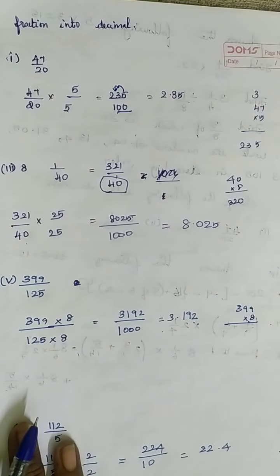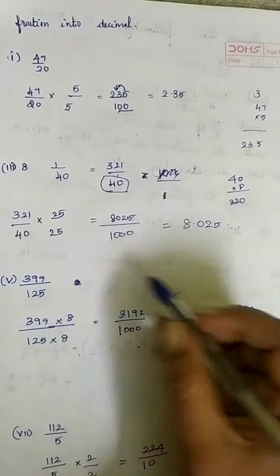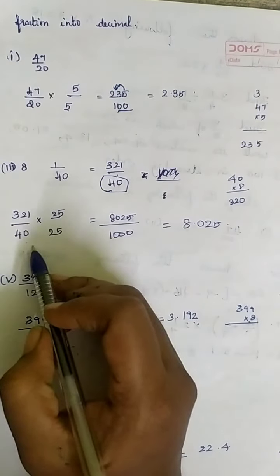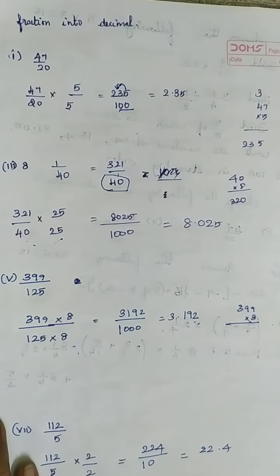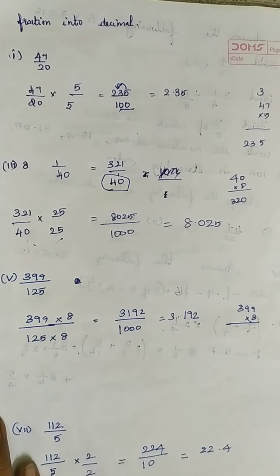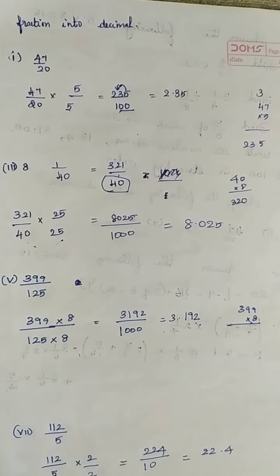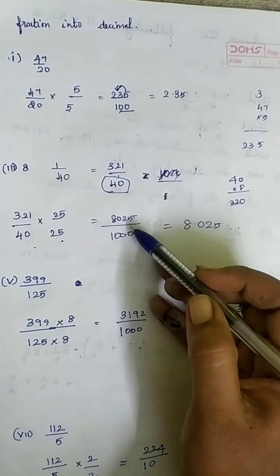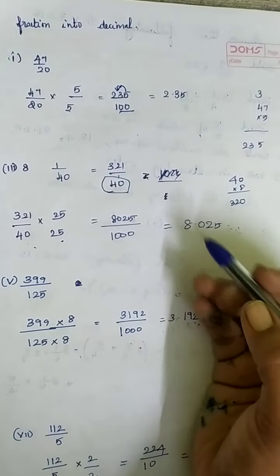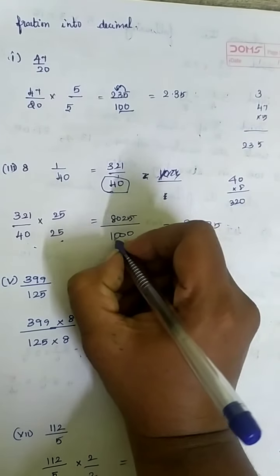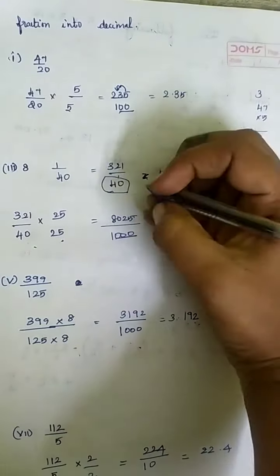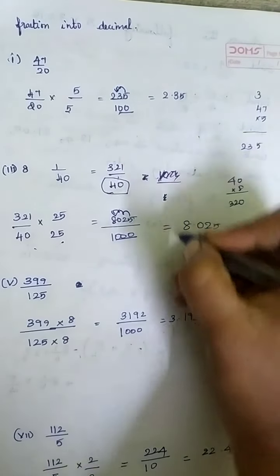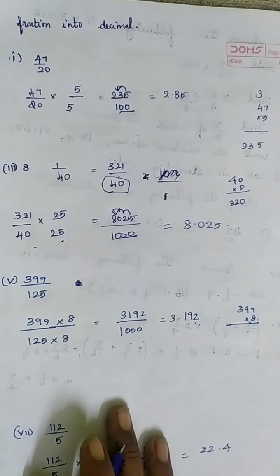The denominator is 40. To make it a multiple of 10, 100, or 1000, we are going to multiply 40 by 25. When you multiply 40 by 25 you will get 1000. The numerator is also multiplied by 25. If you multiply 321 by 25 you will get 8025. So the denominator has 3 zeros, meaning you will move 3 digits towards the left. So the answer is 8.025.